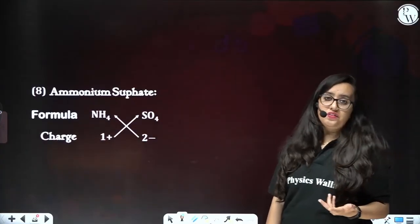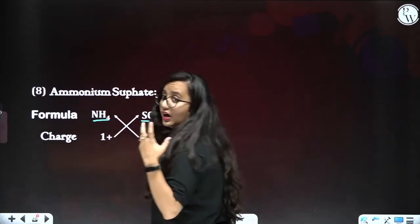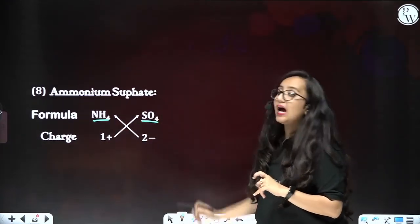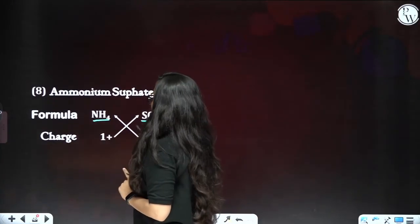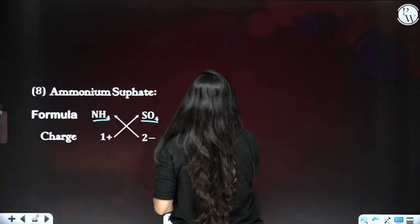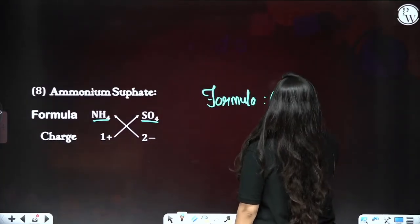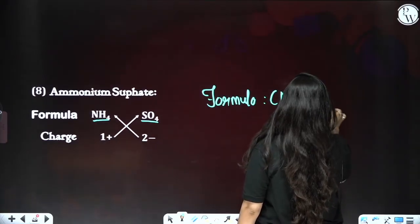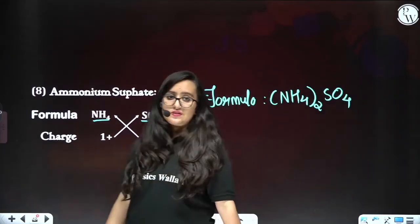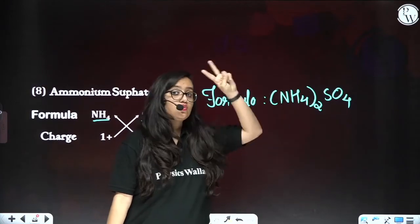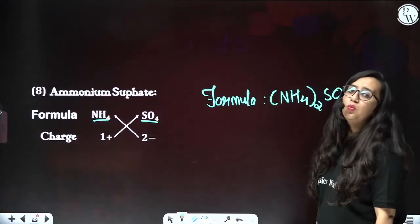Next is ammonium sulfate. Both ammonium and sulfate are polyatomic ions. For ammonium it is plus 1, for sulfate it is 2⁻. Cross-multiplying: two goes with ammonium, giving (NH₄)₂SO₄. I have made brackets because there are two ammonium ions — more than one, so brackets are compulsory. That is your ammonium sulfate.